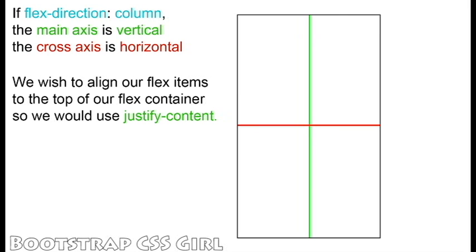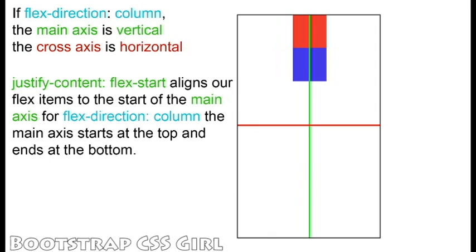Our FlexDirection is set to Column, and we would like to align our FlexItems to the top of our container, so we will use the JustifyContent property. To align our FlexItems to the top, we set JustifyContent to FlexStart. This moves our FlexItems to the start of our main axis. With FlexDirection set to Column, the main axis starts at the top and ends at the bottom.